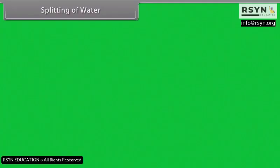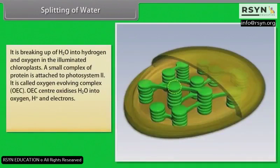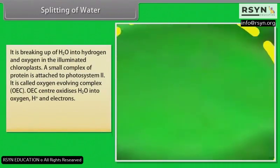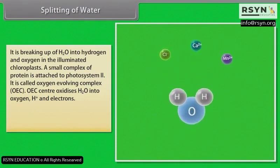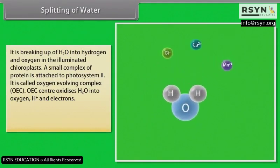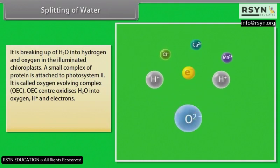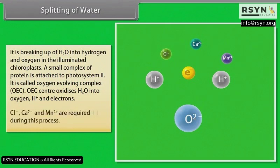Splitting of water is the breaking up of H2O into hydrogen and oxygen in the illuminated chloroplast. A small protein complex attached to Photosystem 2, called the oxygen-evolving complex (OEC), oxidizes H2O into oxygen, H+ ions, and electrons. Cl−, Ca2+, and Mn2+ are required during this process.